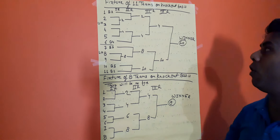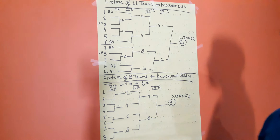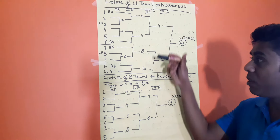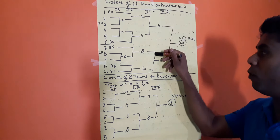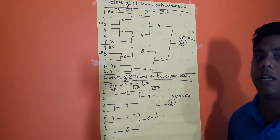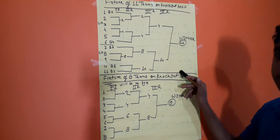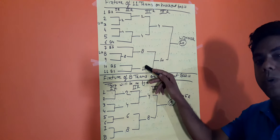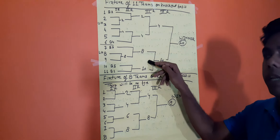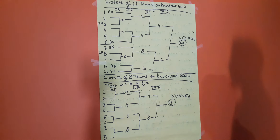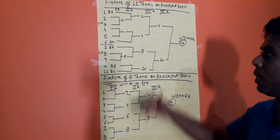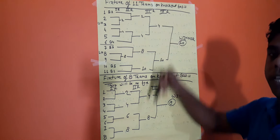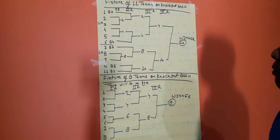For making the fixture of 11 teams on a knockout basis, I will revise before starting. First, you have to write the formula in the exam before making this picture: the total number of teams to be removed, the next power of 2, total number of rounds, and total number of matches. You can see the description for all the formulas and procedure for fixing this knockout basis.